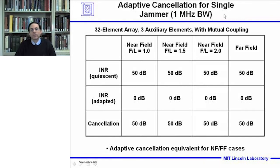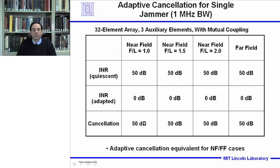This slide shows the adaptive cancellation for the single jammer with 1 MHz of nulling bandwidth — a 32-element monopole array with three auxiliary elements with mutual coupling. We show three near field cases focused at one, 1.5, and two aperture diameters, plus the far field case. The jammer is located at 40 degrees from broadside. Before nulling, the interference and noise ratio is 50 dB in each case. After adaption, with sufficient degrees of freedom, the INR is 0 dB in all cases, meaning the cancellation is 50 dB every case. We conclude that adaptive cancellation is equivalent for focus near field nulling and focus far field nulling.